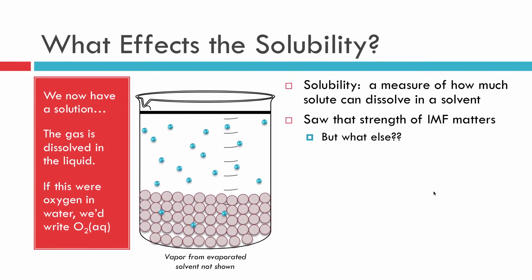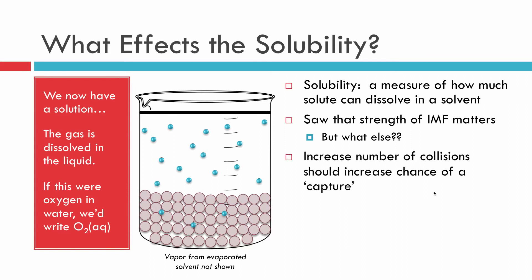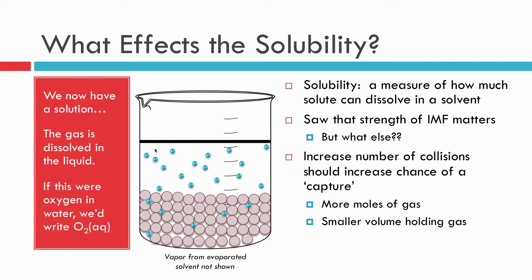What affects this solubility — how many molecules can actually get into the solvent at a particular temperature and pressure? We saw that intermolecular forces matter. But increasing collisions between the gas and the liquid surface also increases the opportunity for dissolving. We could add more moles of gas to make more collisions, or we could make the volume smaller so the same number of molecules collides more often. Both approaches give us more dissolved gas.